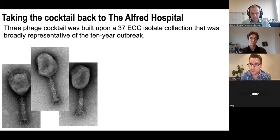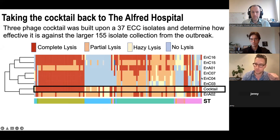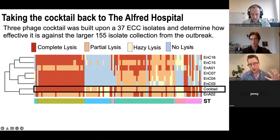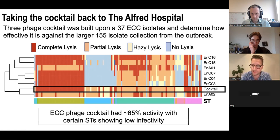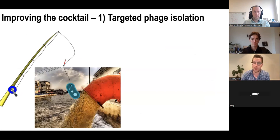Interestingly, all three phages were propagating in the host with a slight preference for EnA02 — the phage that didn't show emergence of resistance — though not significantly different. At this point we felt we had a pretty good cocktail. We went back and tested it against the whole clinical collection using a spot test assay. Our cocktail performed okay — about 65% coverage against the library — but not as high as we'd like. There were several problematic sequence types with low coverage and low activity, so we went back to the lab wanting to do better.